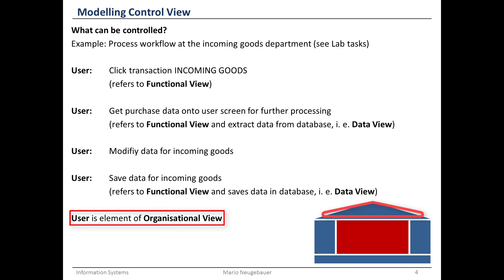The user is also an element of the organizational view, on top of the RS house. It is important to assign these human resources — this organizational element — to certain activities. For example, the activity 'check incoming goods' would be performed by a user in the incoming goods department. So this example process has references to the functional view, the data view, and the organizational view — all important views in the RS house.